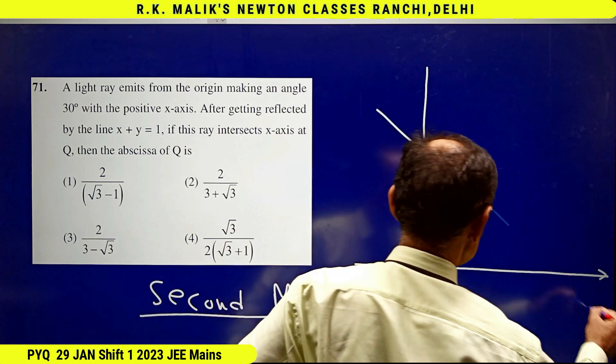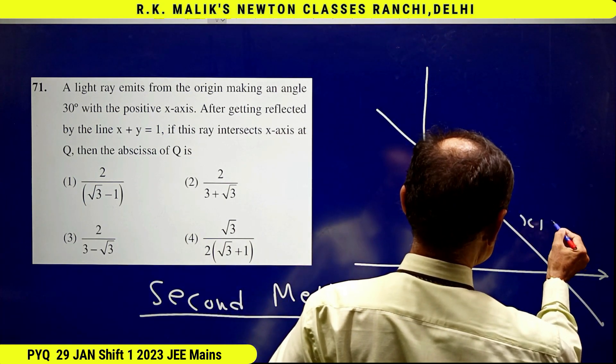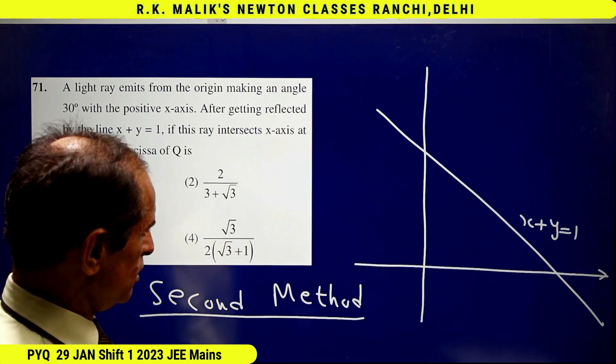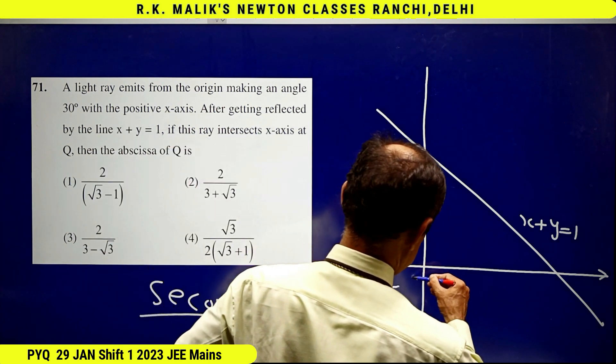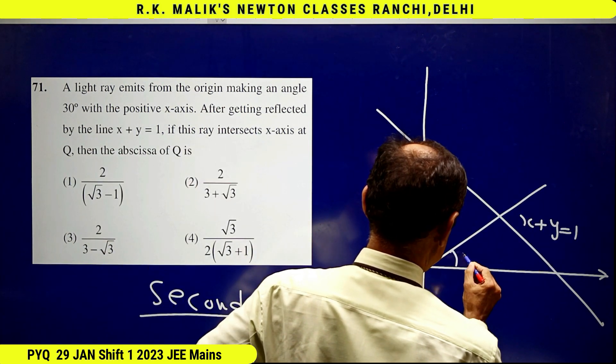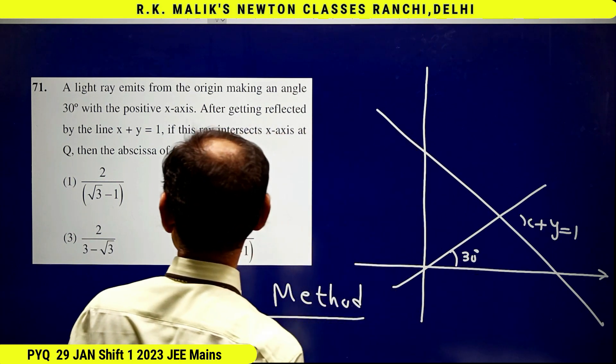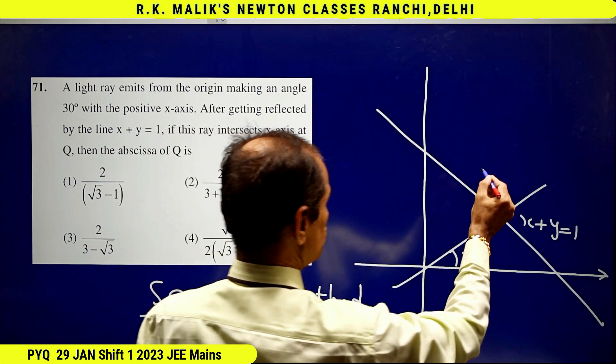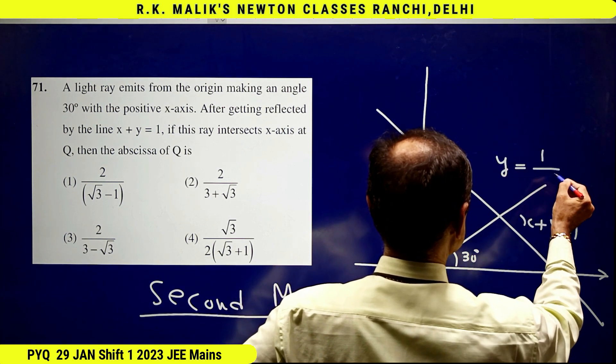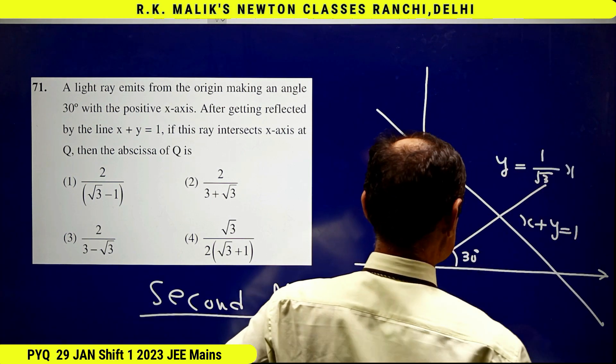In this method, this is the line x + y = 1, and this is the line making an angle of 30 degrees with the positive direction of the x-axis. The equation of this line is y = x/√3.